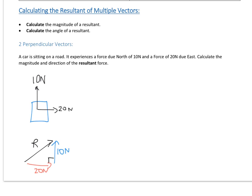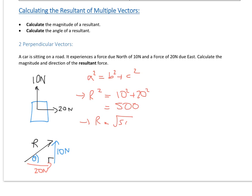Let's call the angle theta — we're going to state the direction as the angle to the east direction. We apply Pythagoras' theorem: the resultant squared equals 10 squared plus 20 squared, which is 500. So the resultant is the square root of 500, which is 22.36, giving us 22 newtons to two significant figures. That is the magnitude.